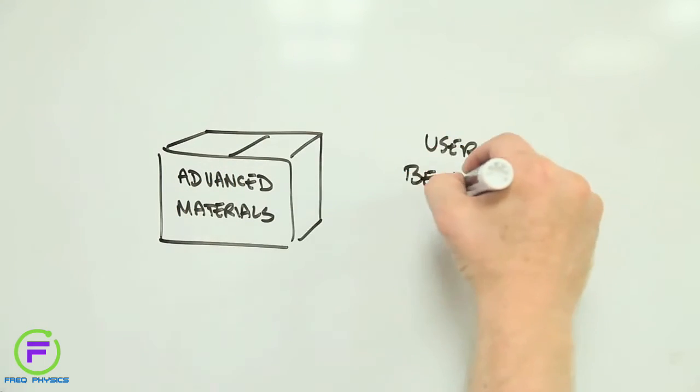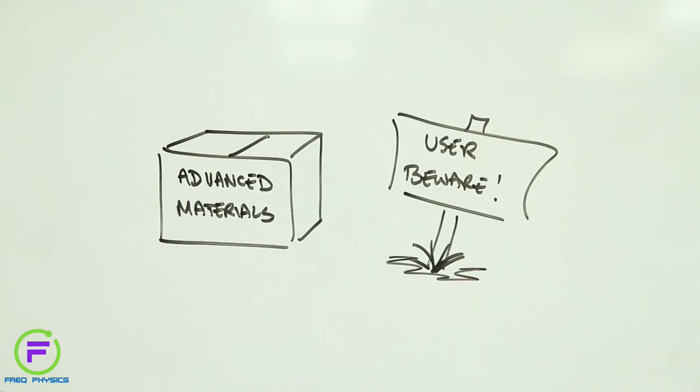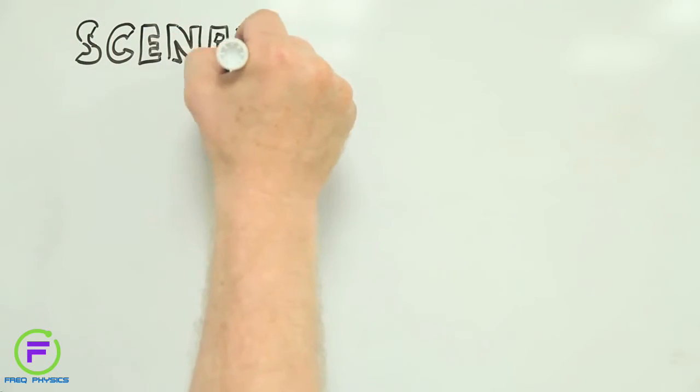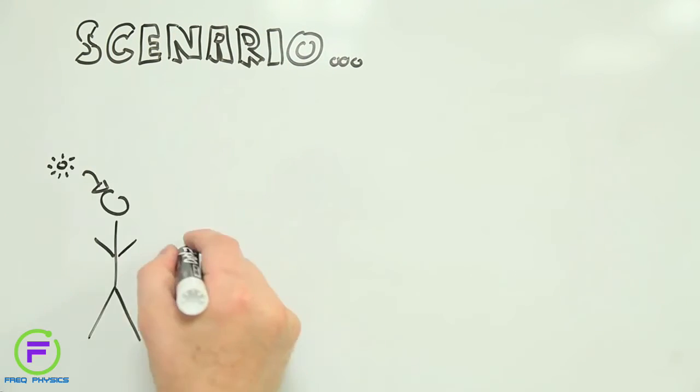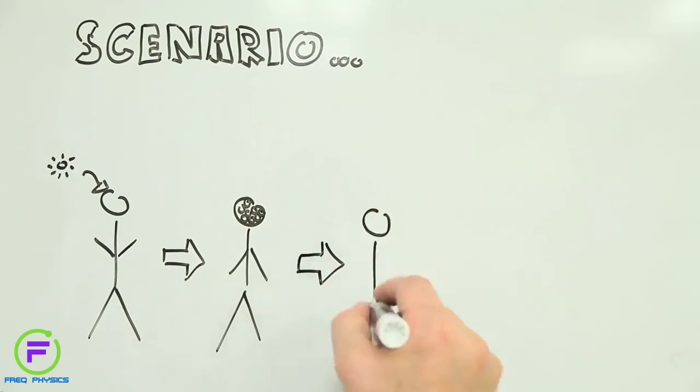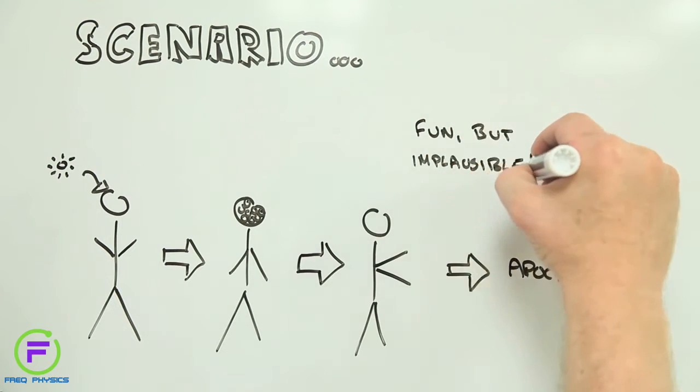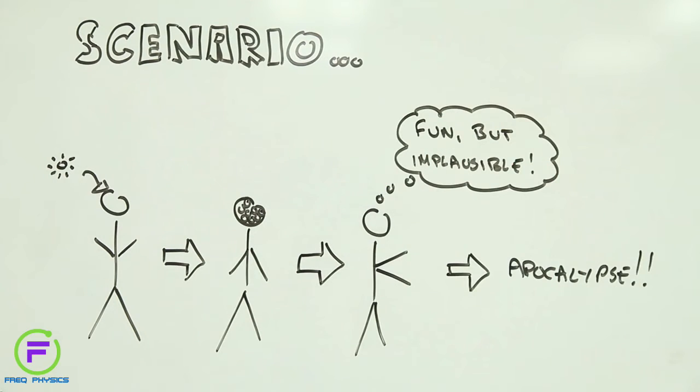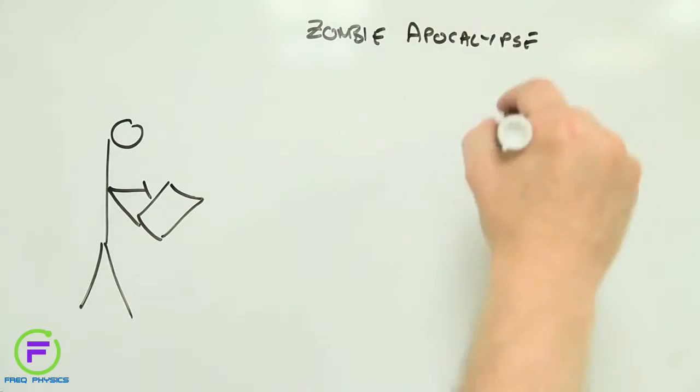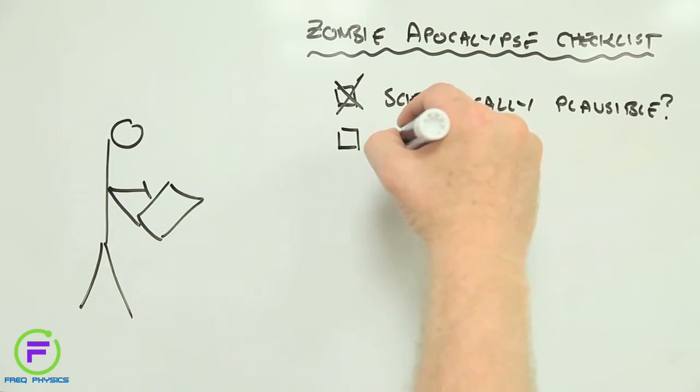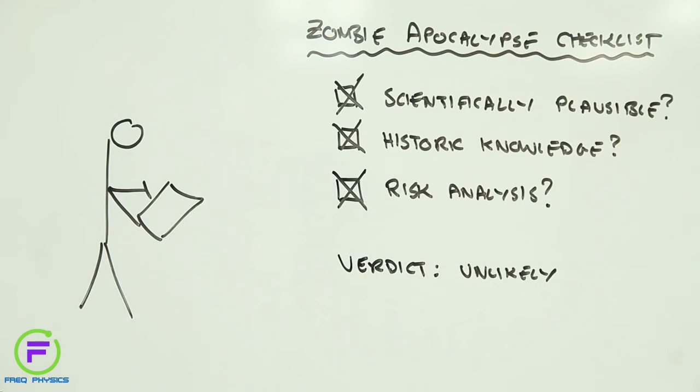But if you've got a brand new, never before used material, how do you know what it might do that you probably don't want it to? One approach is to assume the worst. Maybe that novel never before seen nanoparticle could burrow into your brain, replicate itself and bring about the next zombie apocalypse. Maybe it could, but probably it won't. Fortunately, a firm grasp of scientific reality, past experience and some risk analysis know-how go a long way to helping predict the likely ways a new material might be harmful and how that harm can be avoided.